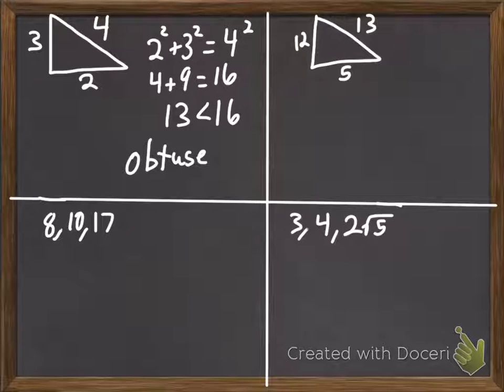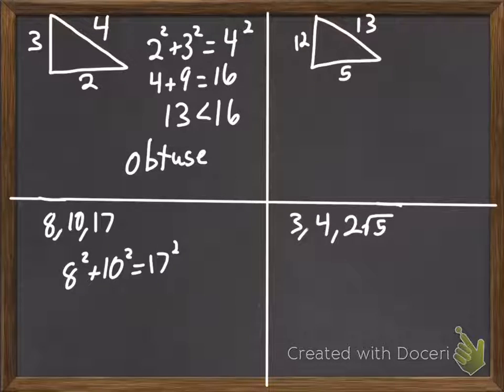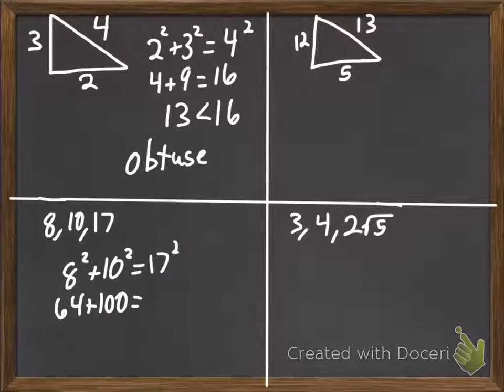Okay, now on the lower left, I have just three numbers here. These are the sides of a triangle ordered from smallest to largest. So, that number on the right will be our possible hypotenuse. So, we have 8 squared plus 10 squared equals 17 squared. 8 squared is 64 plus 100 equals, I have to grab my calculator, 17 times 17, 289.